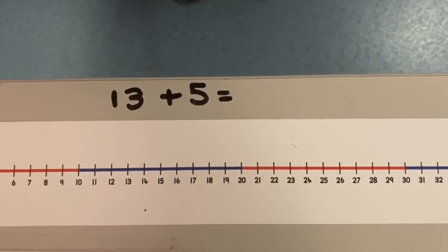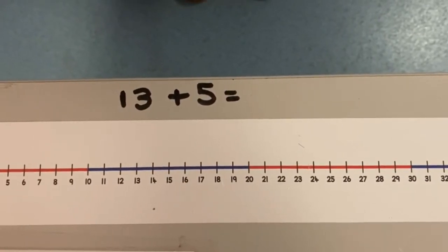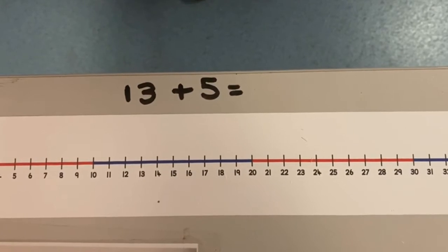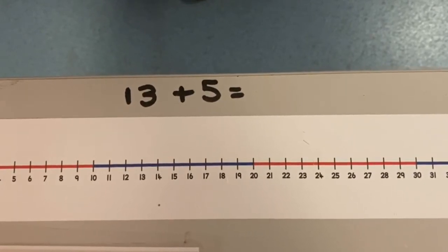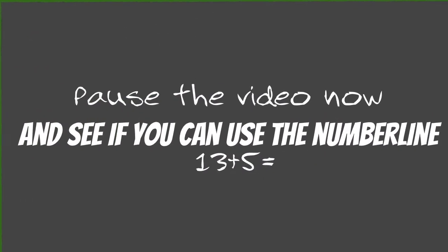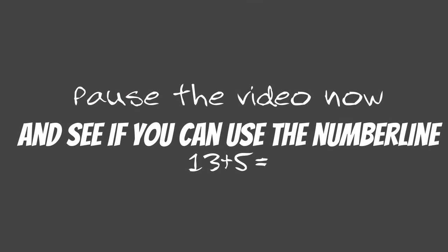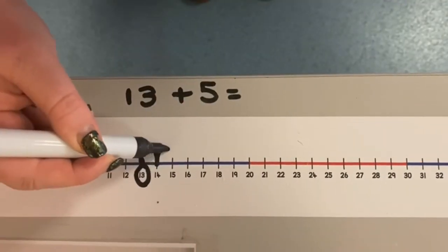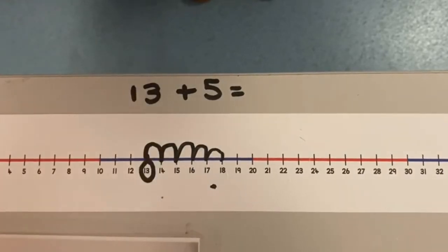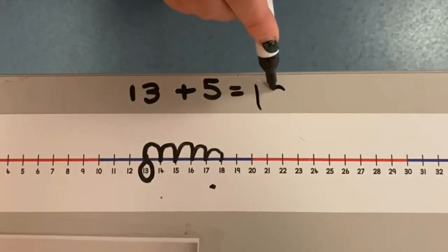Now I'd like you to have a go at this one: 13 add five. On your number line, find the number 13 and take five jumps. Hopefully you got one, two, three, four, five — your answer is 18.